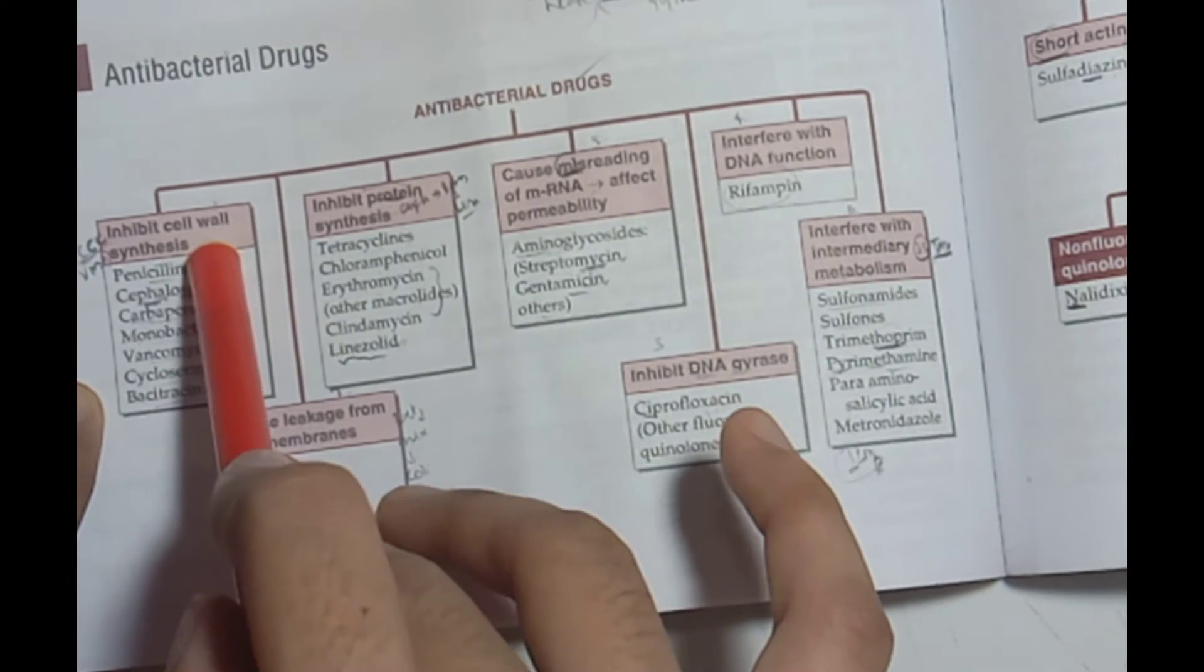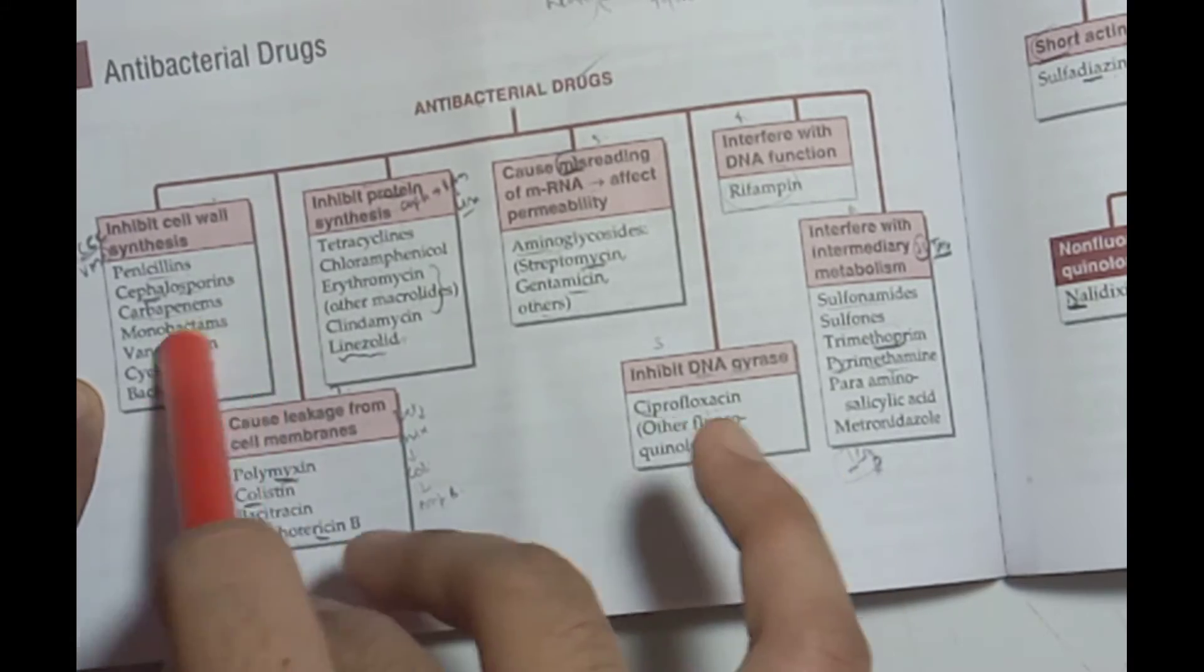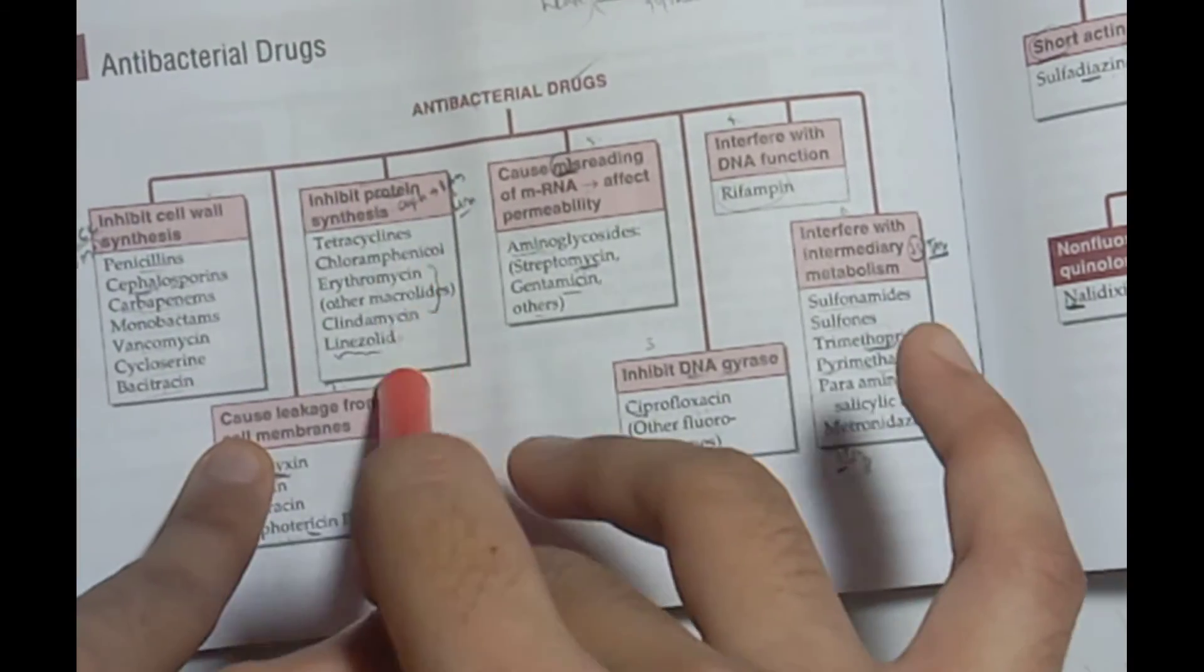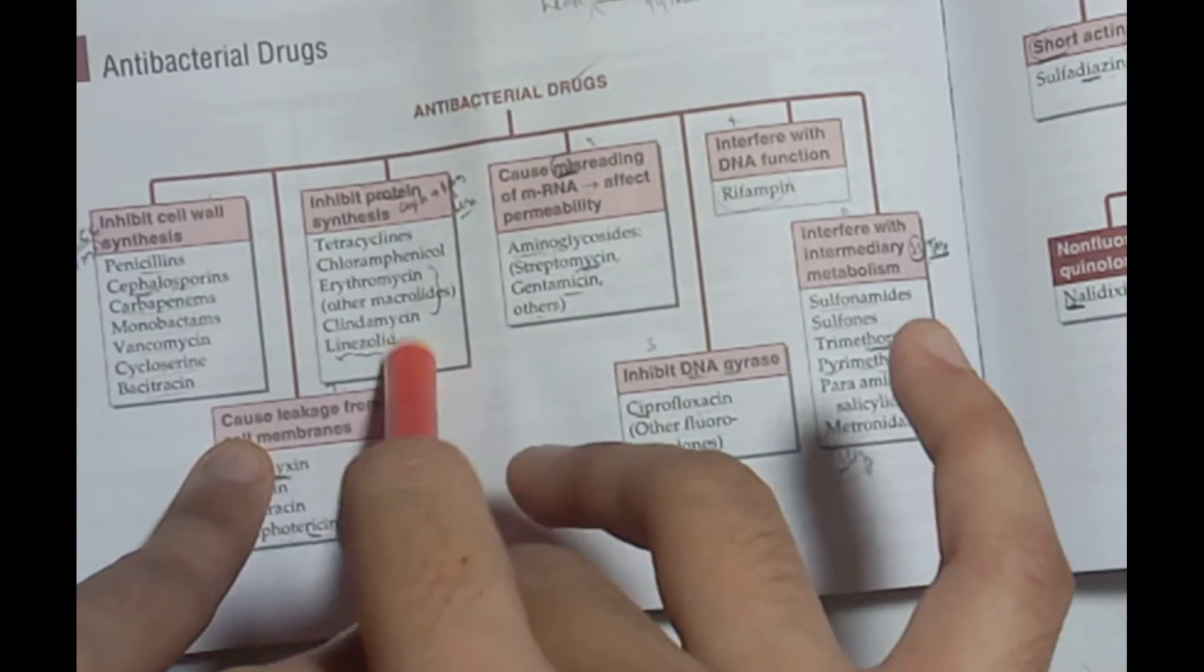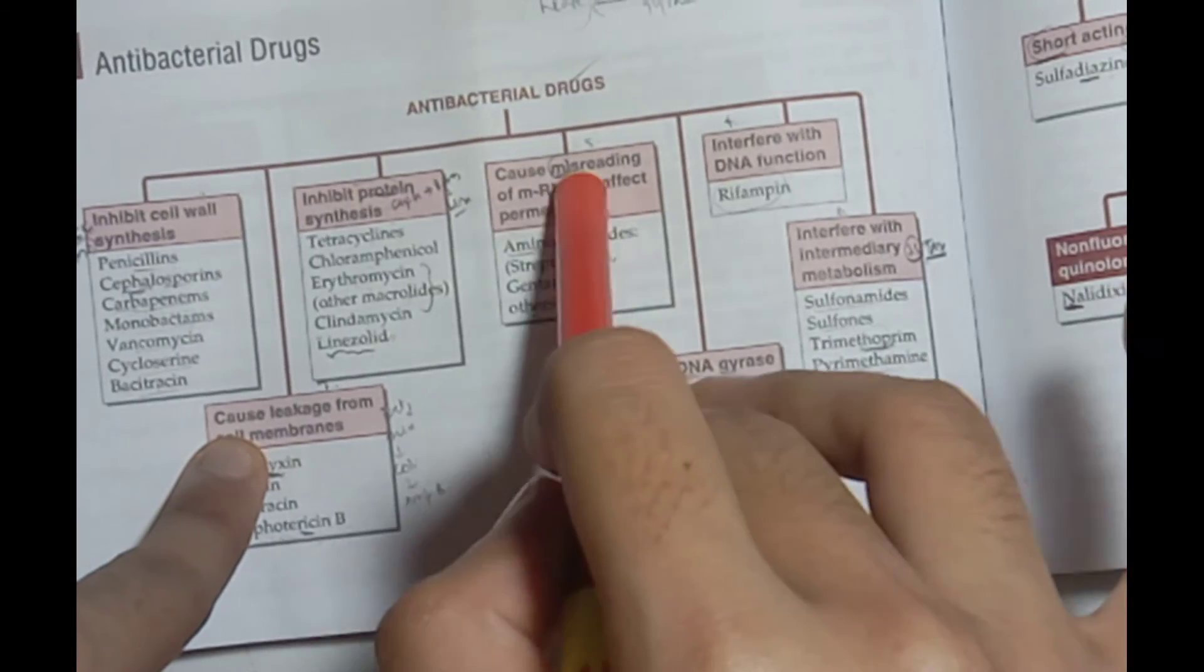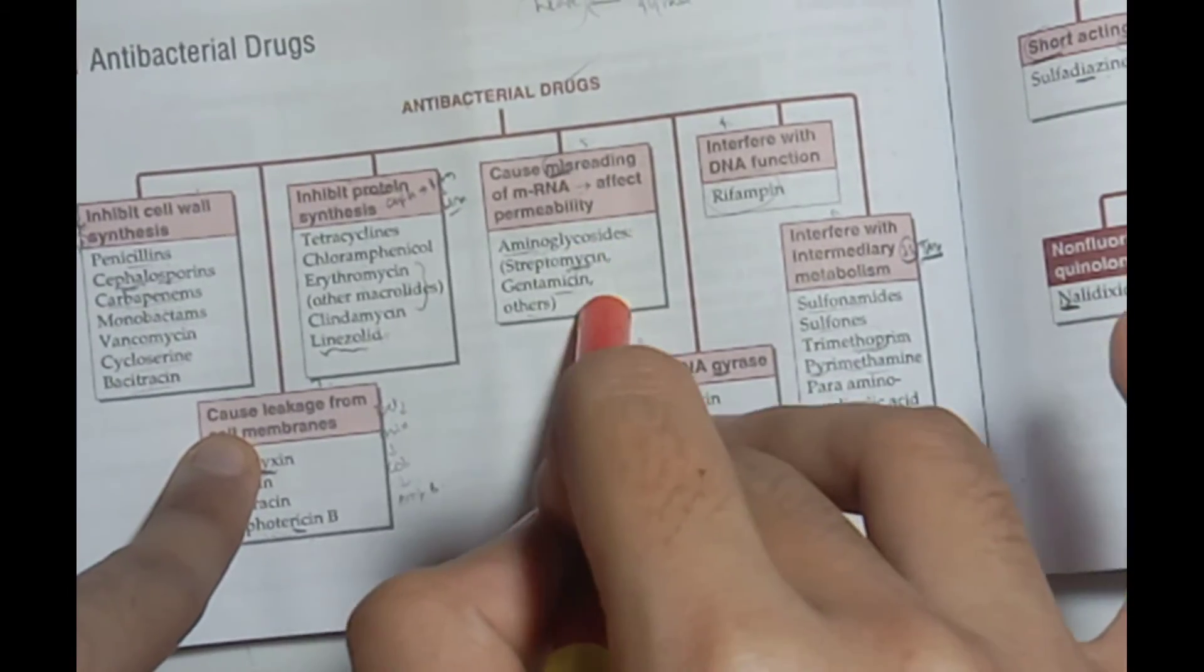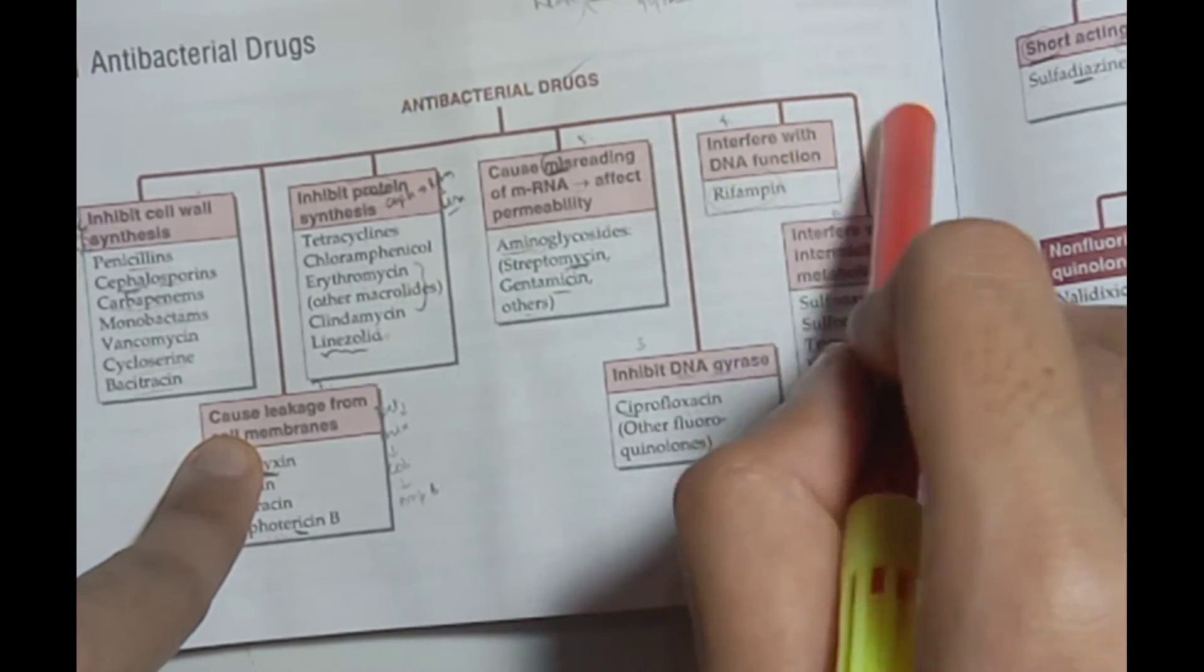PCC-VMB: Penicillin, Cephalosporin, Carbapenem, Cycloserin, Vancomycin, Monobactam, and Bacitracin. For protein synthesis, remember the line: Chloramphenicol, Linezolid, Erythromycin, and Clindamycin. For misreading, it will be Gentamicin and Streptomycin, the aminoglycosides. If DNA is pinning, it will be Rifampin.